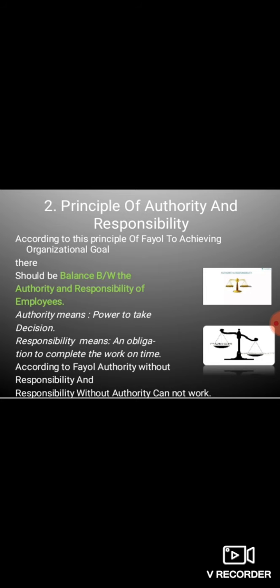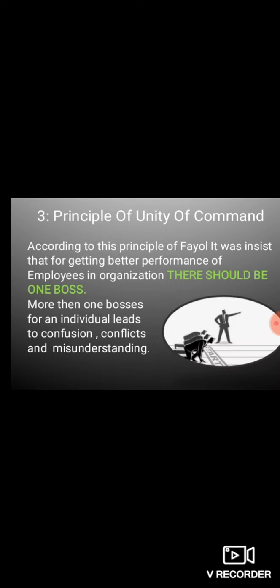Fayol ने कहा कि authority and responsibility equal होनी चाहिए। Next principle is Unity of Command। इसमें Fayol ने कहा है कि organization में केवल एक boss होना चाहिए। यदि किसी organization में एक से ज़्यादा bosses होते हैं तो organizational employees में conflicts, confusion, misunderstanding, disputes के chances arise होने के ज़्यादा रहते हैं और employees को confusion होता है कि वो किसके order को follow करें।